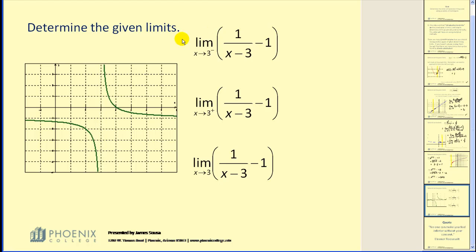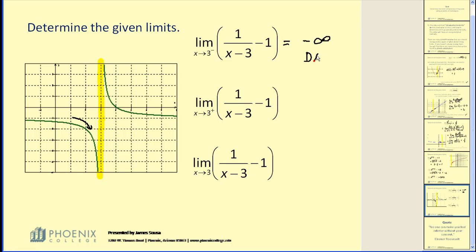Let's take a look at one more — determine the limits of the given function. This first limit is as x approaches positive 3 from the left. So we'll be approaching this yellow vertical line, but only from the left. As we approach from the left, you can see that the graph goes down indefinitely, so the y values would be approaching negative infinity. As discussed in a previous video, negative infinity does not exist.